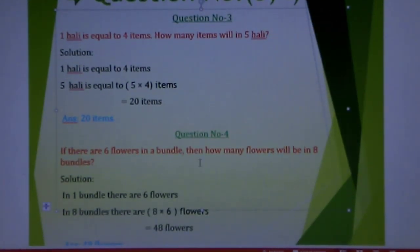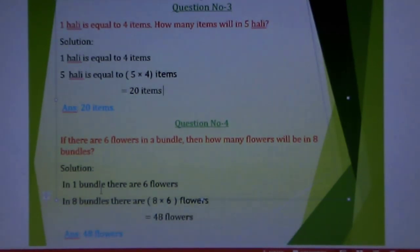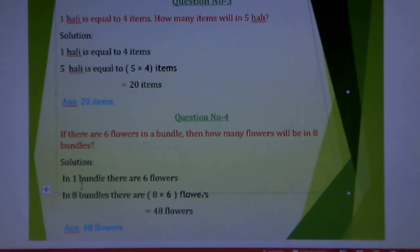Now, question number 4: If there are 6 floors in a bundle, then how many floors will be in 8 bundles? In this math, I have to find out how many floors will be in 8 bundles. If 1 bundle have 6 floors, then 8 bundles have more floors. Therefore, floors will be increased. So, I have to do multiply. So I can do: